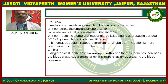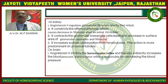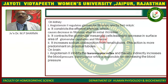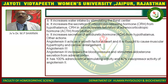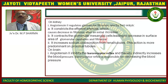Angiotensin-2 regulates the glomerular filtration rate in two ways: it constricts the efferent arteriole, which decreases filtration after an initial increase, and it contracts glomerular mesangial cells, leading to a decrease in the surface area of the glomerular capillary. It also increases sodium reabsorption from the renal tubules, an action that is most prominent in the proximal tubule.